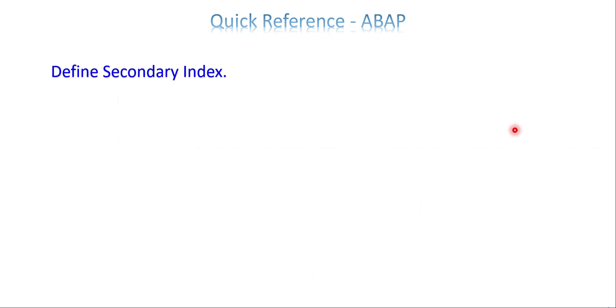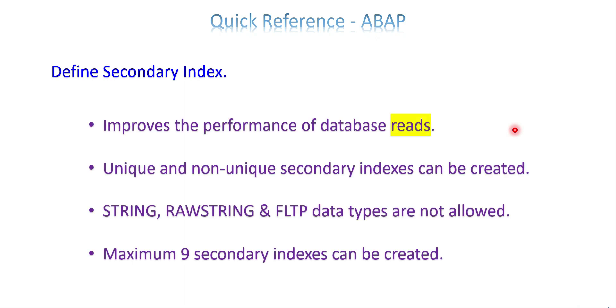Define Secondary Index: The name itself suggests it's a secondary index, not primary. Most SAP tables come with the primary, and sometimes they may also have a standard secondary index. The understanding is that the primary is not enough—I need a secondary index also for a few of the fields. As per business requirements, if I'm going to use another field frequently which is not part of the primary index, I can add it to a secondary index.